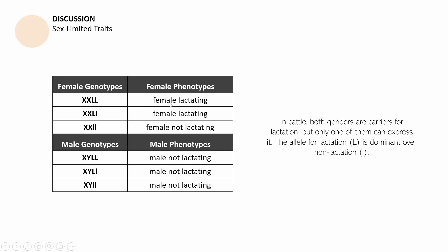When heterozygous, since the dominant uppercase L is present, it will also make the female lactate. But the absence of that dominant trait — such as the homozygous recessive case — will make the female non-lactating. So when homozygous dominant, the female will lactate. When heterozygous, the female will still lactate. And when it is the pairing of the two recessive traits, the female will not lactate.